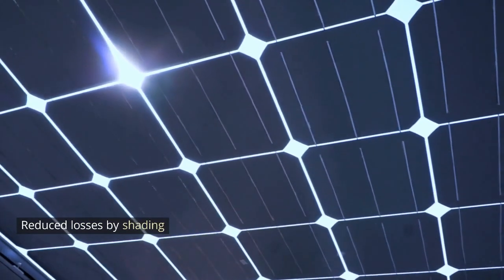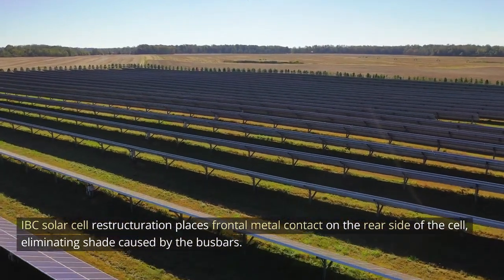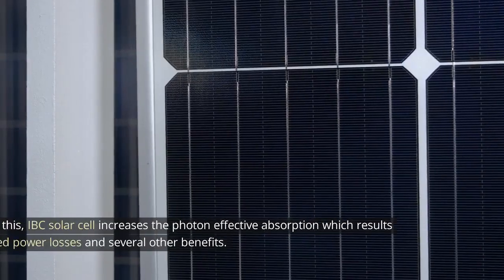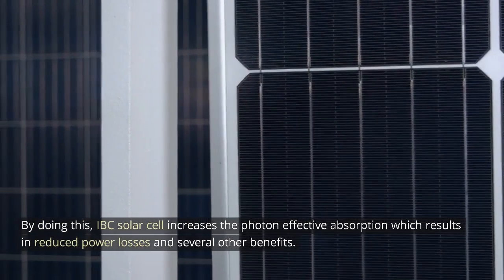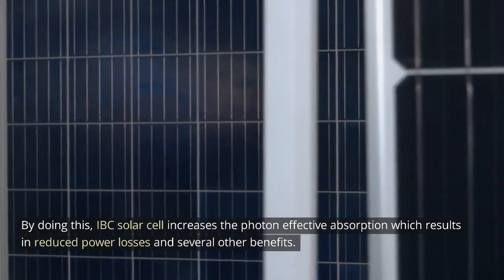Reduce losses by shading. IBC solar cell restructuration places frontal metal contact on the rear side of the cell, eliminating shade caused by the bus bars. By doing this, IBC solar cells increase the photon effective absorption which results in reduced power losses and several other benefits.